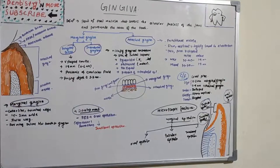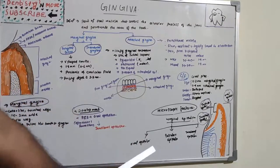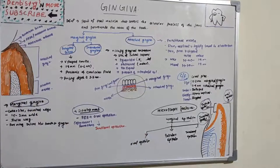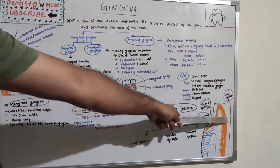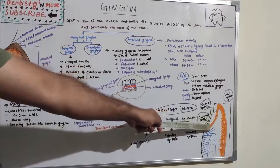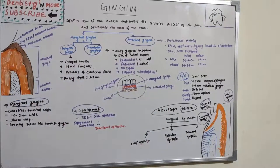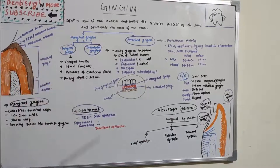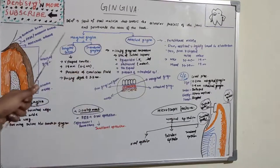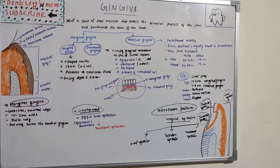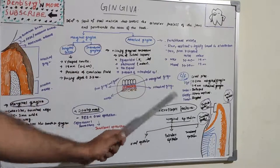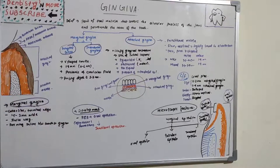We have sulcular epithelium, which is seen in the gingival crevice, and oral epithelium, which covers the outer surface of gingiva. So we have oral epithelium, sulcular epithelium and junctional epithelium. Junctional epithelium is the fusion of reduced enamel epithelium — present on the enamel surface after tooth formation — which joins with oral epithelium to become junctional epithelium. Now let's see the various epithelial types: oral, sulcular and junctional epithelium of gingiva.